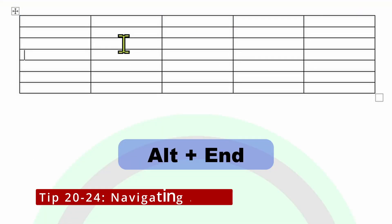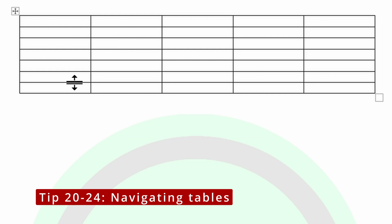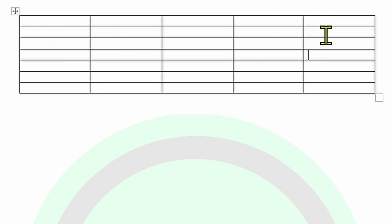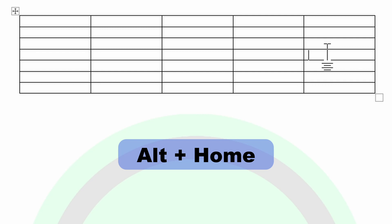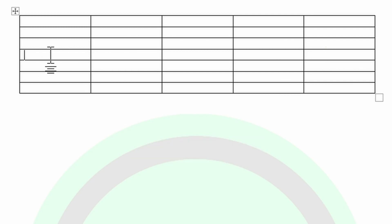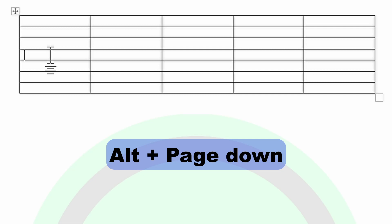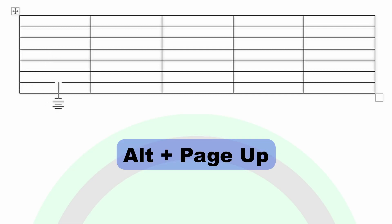You can press the Alt key and then the End key to move the cursor from the first cell to the last cell within the table. You can press Alt and then Home to take you back to the first column. You can press Alt and then Page Down to take you to the last row, and then Alt and Page Up to take you to the very first row.